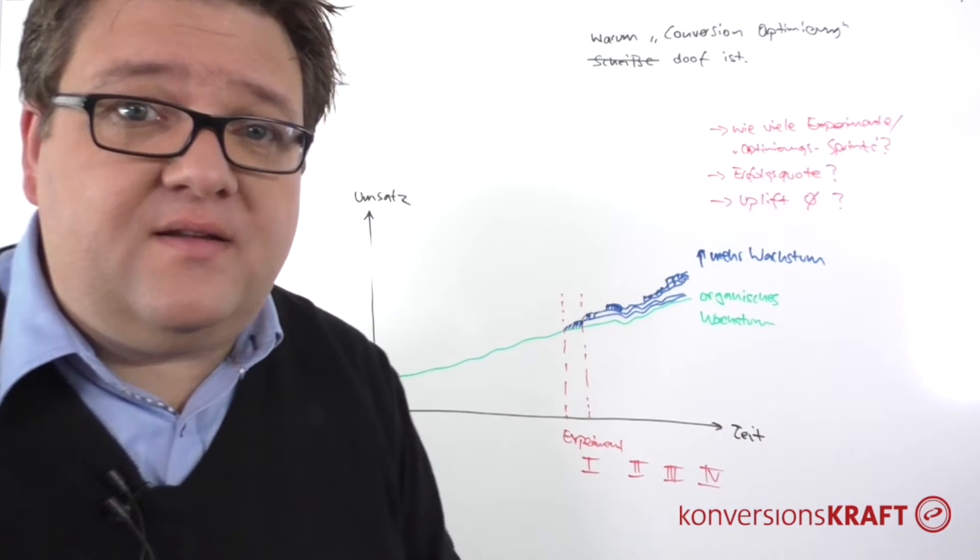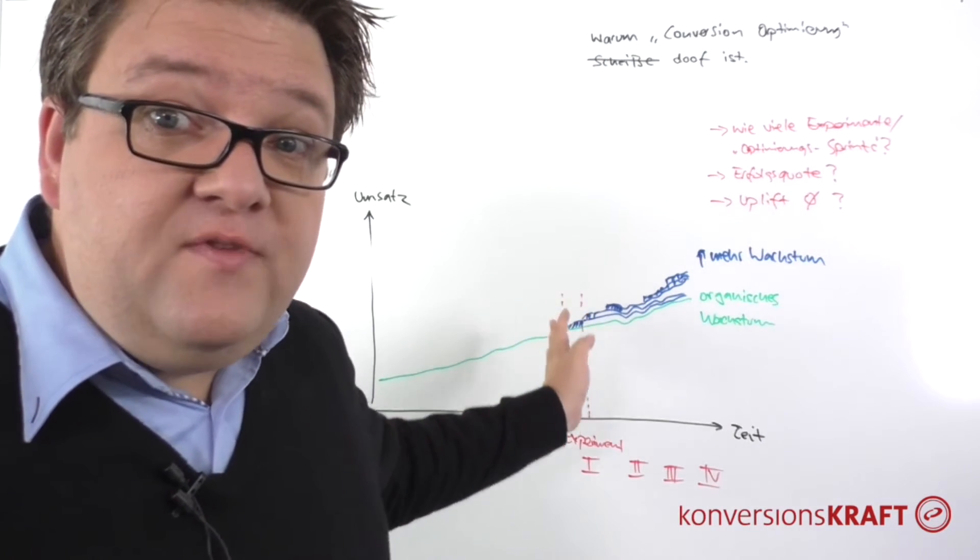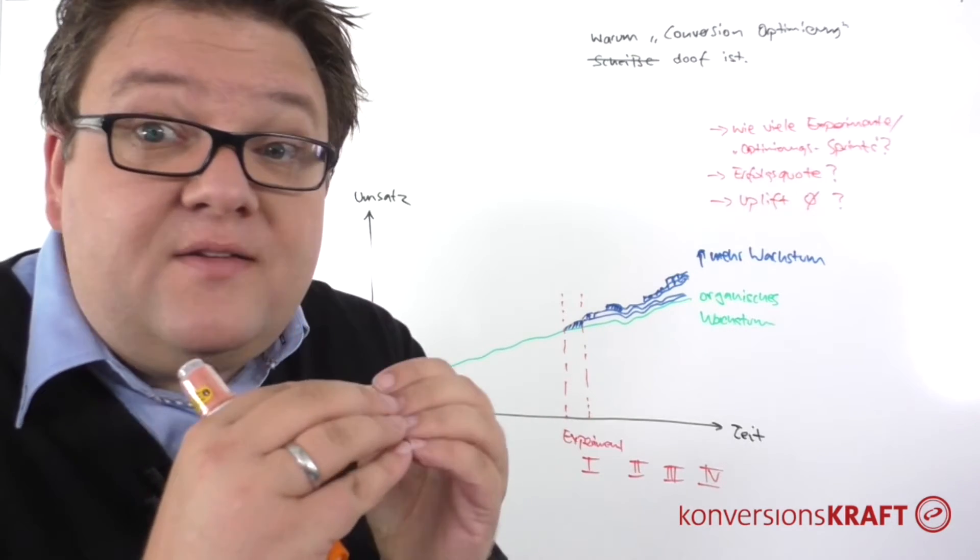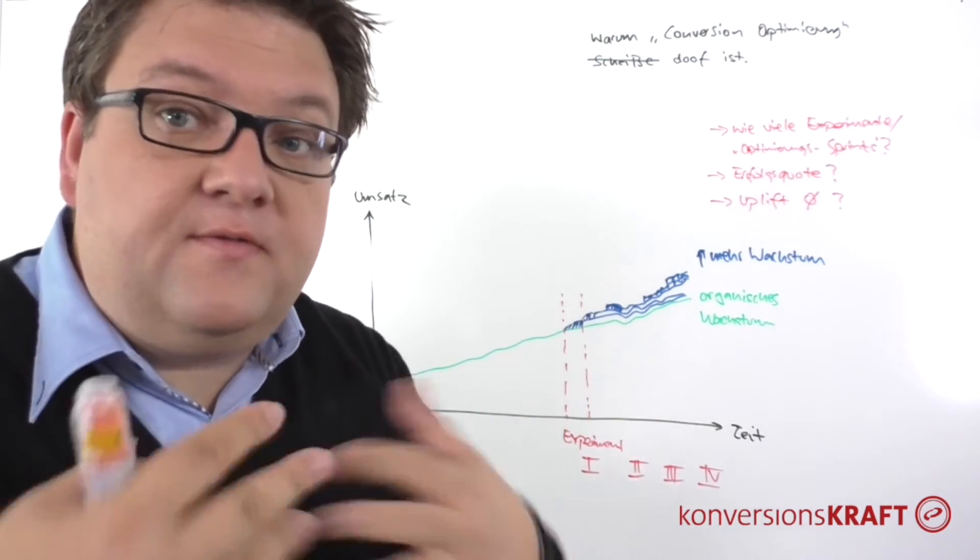Every company has an organic growth curve. In the moment in which we roll an A-B-Test, a successful result makes the company more money. Our experiment says 6% uplift, it will be rolled out.